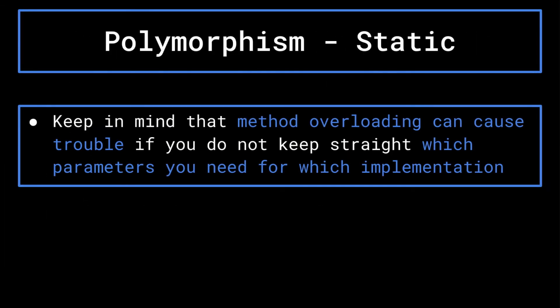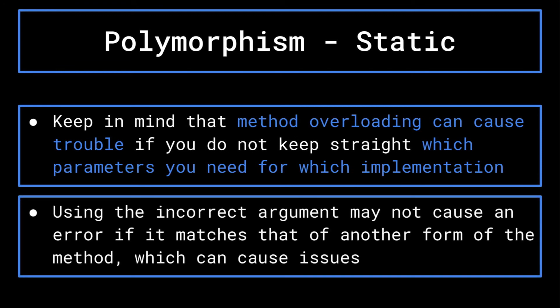Keep in mind that method overloading can cause trouble if you do not keep straight which of the method's implementations you would like to execute, and what form of argument is required to do so. Normally, if you call a method with too many parameters, or parameters of the incorrect type, then the program will throw an error, and you will be able to fix the issue. However, if you mistake the method's argument in such a way that one of the other methods with the same name is called instead, then you may not even be aware that you made a mistake.